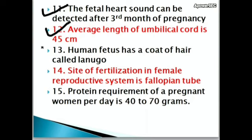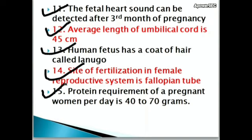Human fetus has a coat of hair called lanugo. Site of fertilization in the female reproductive system is the fallopian tube. Protein requirement of a pregnant woman per day is 40 to 70 grams.